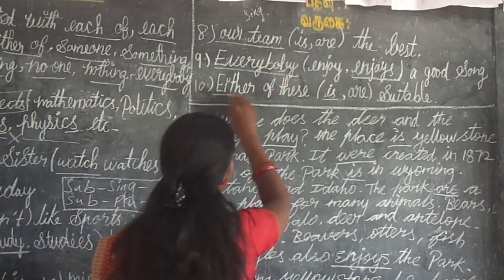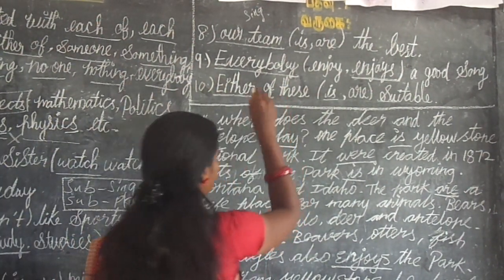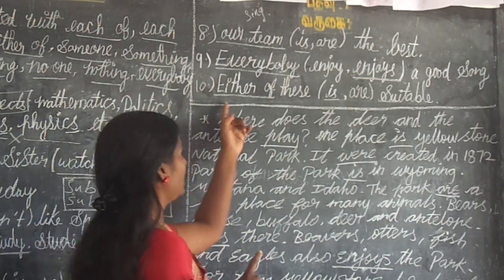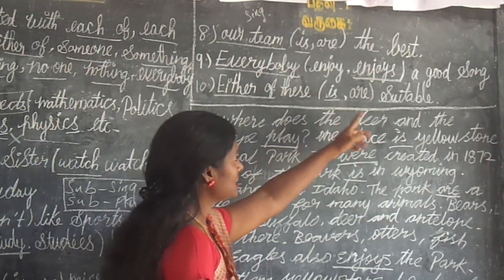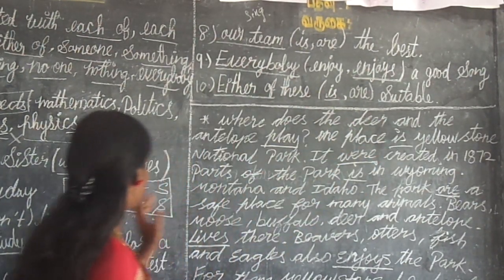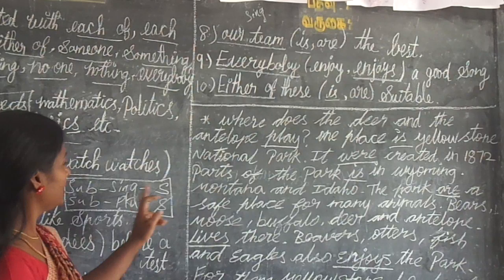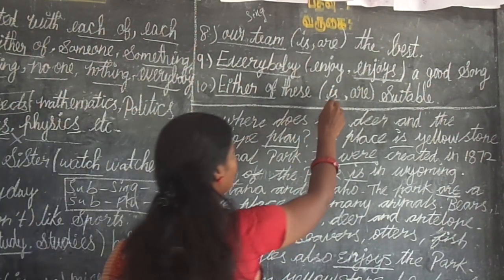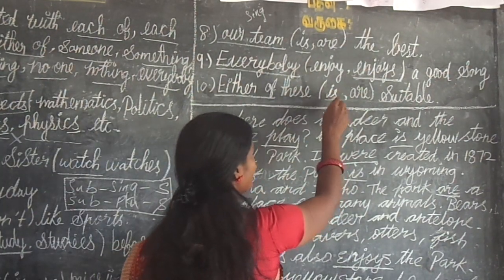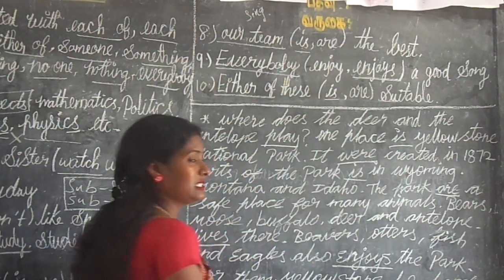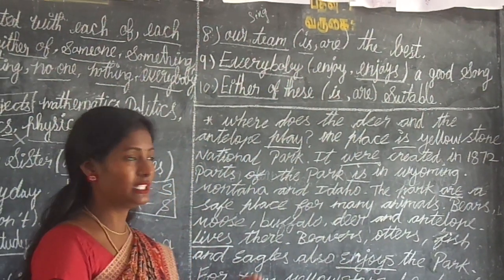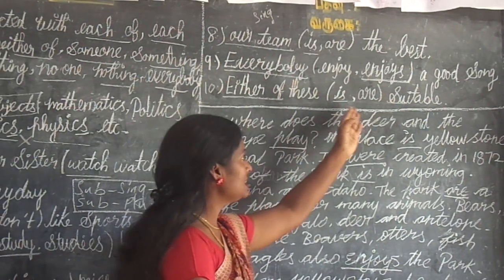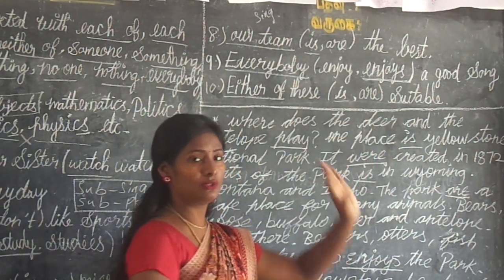Either of, either, neither — these are singular. For the exercise 'either of these,' the subject is singular, so the verb is 'is.' Either of these is suitable.